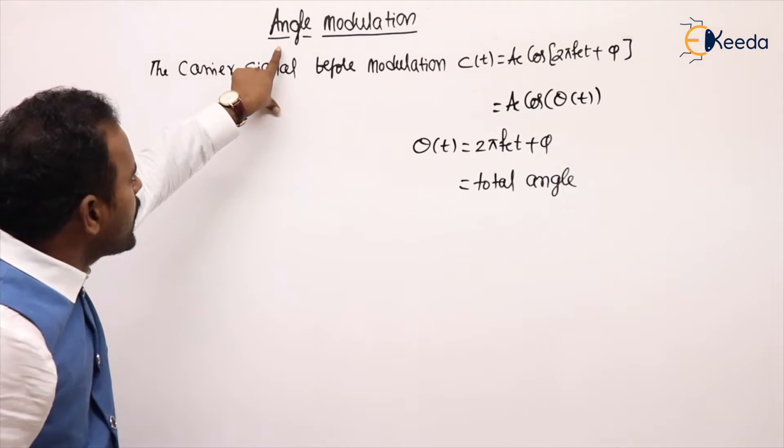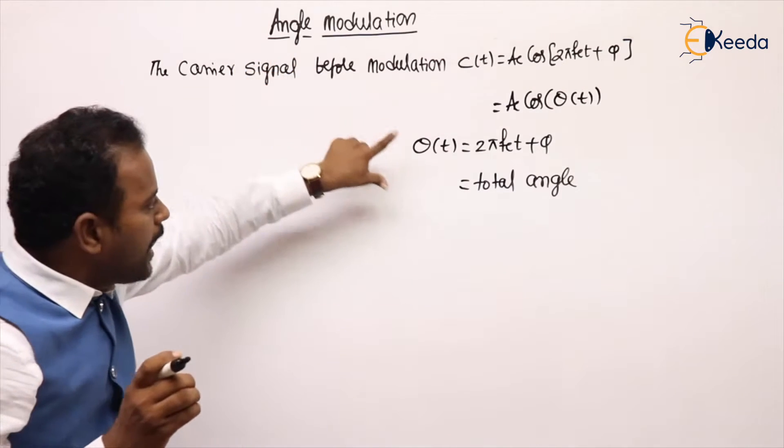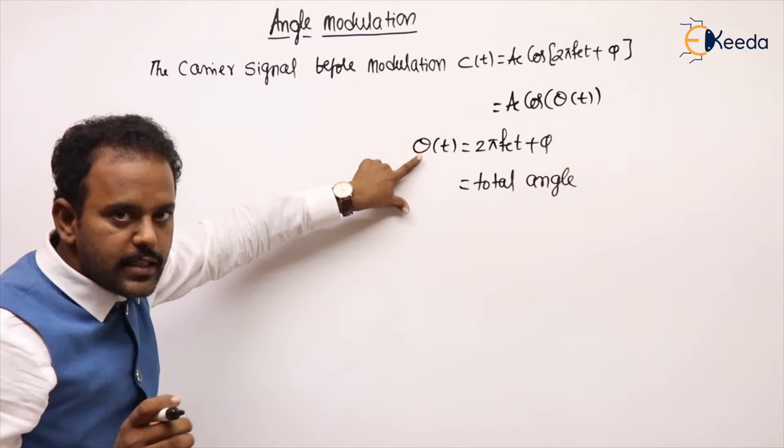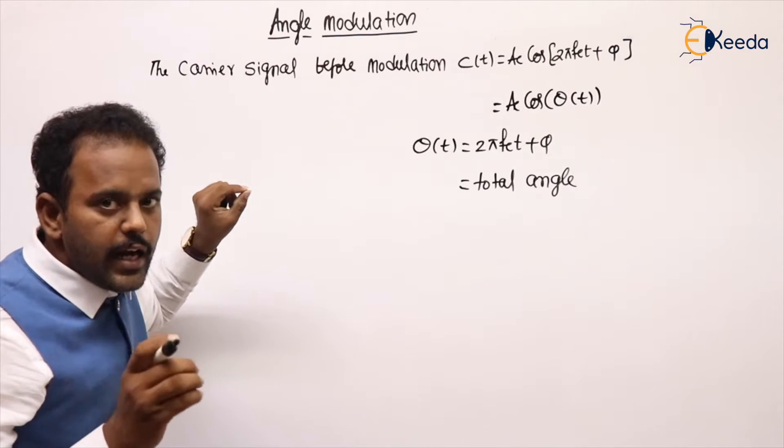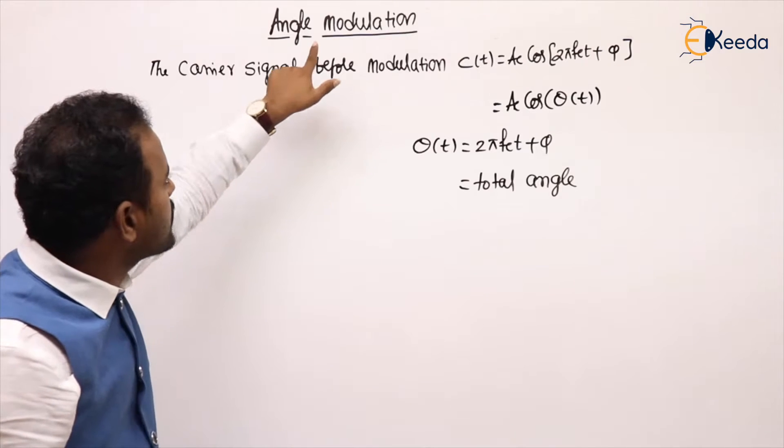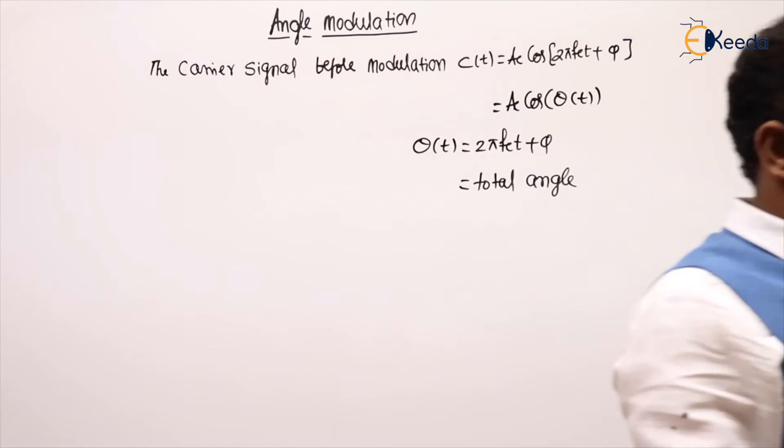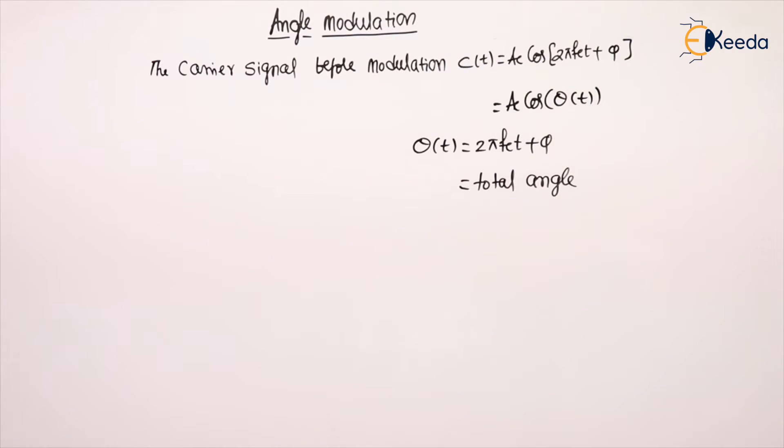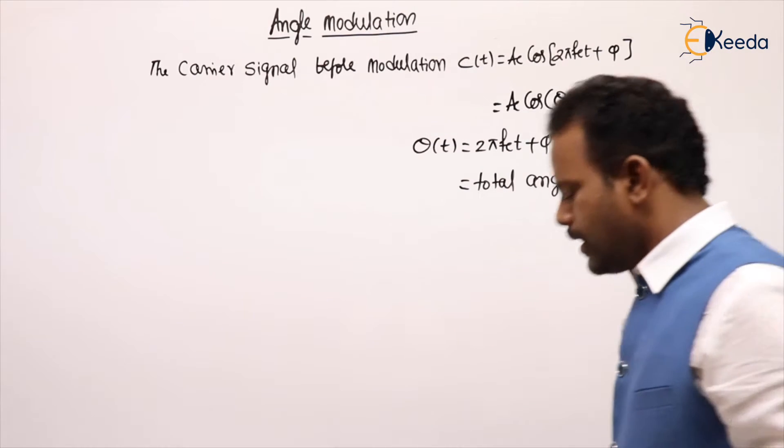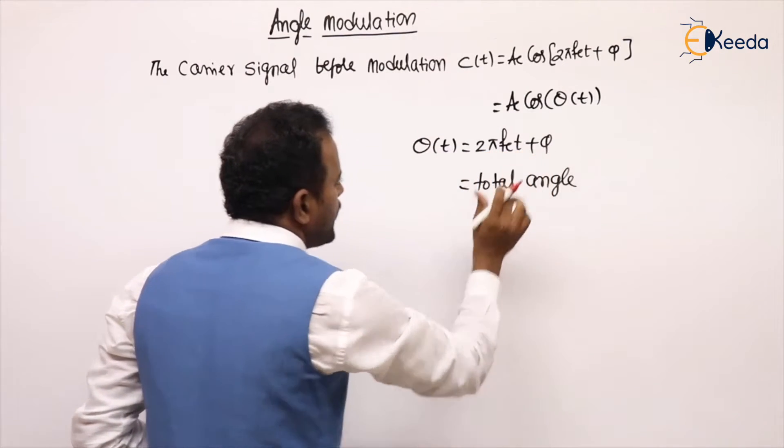Now, what is called angle modulation? It is a process of changing the angle of a carrier, that is θ(t), linearly according to amplitude variations of message. θ(t) is varying. Try to see there. What is the θ(t) expression? The expression for θ(t) is 2πfct + φ.